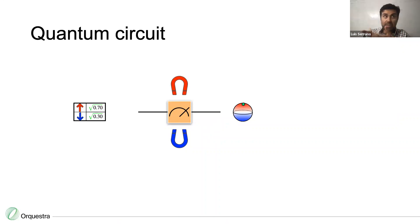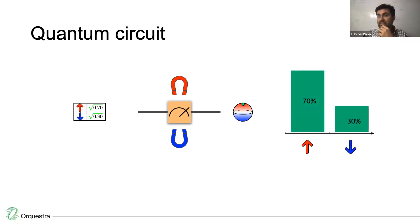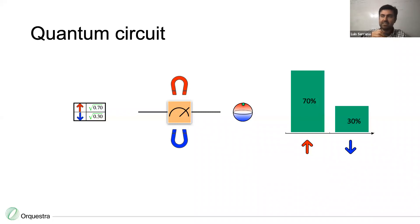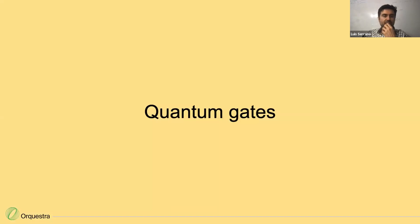I can run this quantum circuit many times and get different answers — sometimes up, sometimes down. The hello world of quantum programs is flipping a fair or biased coin.